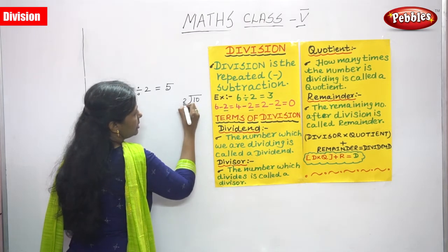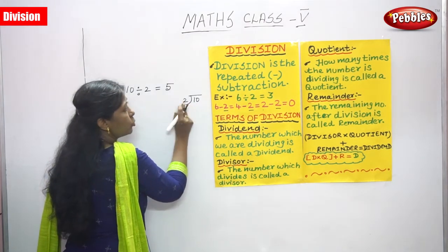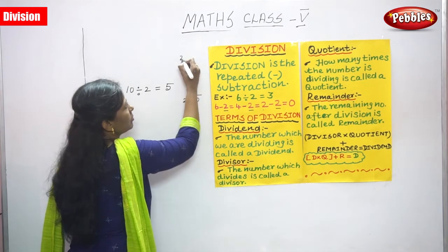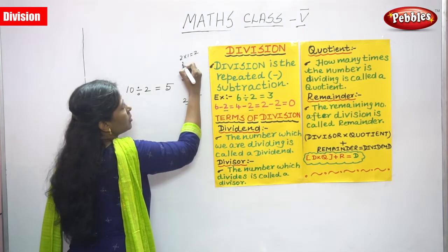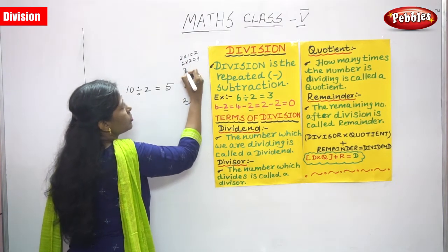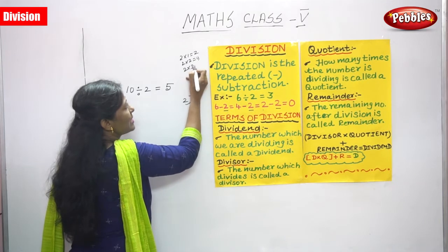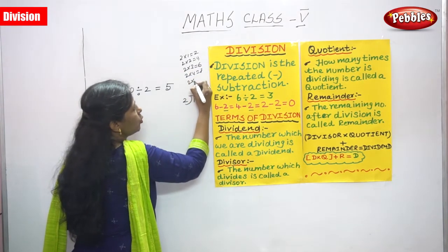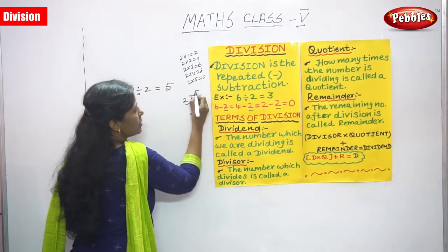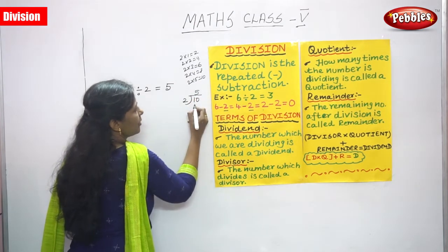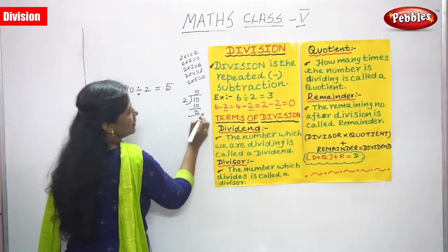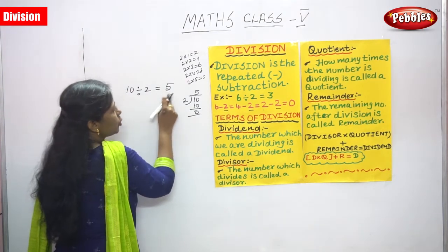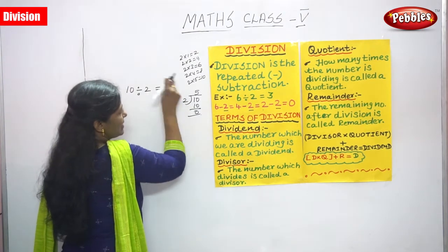10 divided by 2. We have to say the 2 times table: 2 ones are 2, 2 twos are 4, 2 threes are 6, 2 fours are 8, and 2 fives are 10. So what is the answer? 2 fives are 10, the answer is 5. So 10 divided by 2, we will get the answer 5.